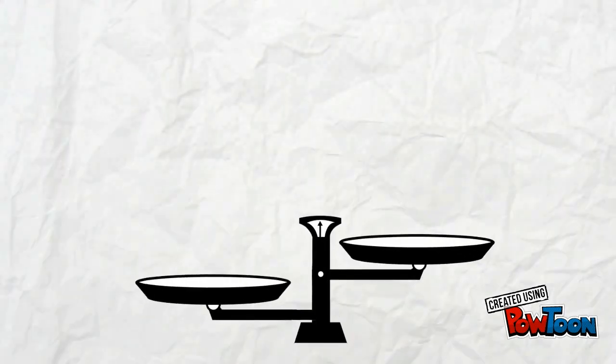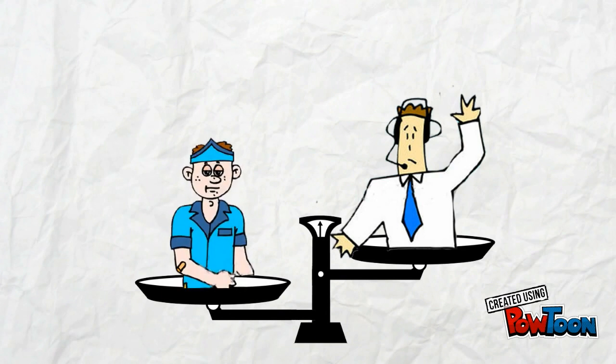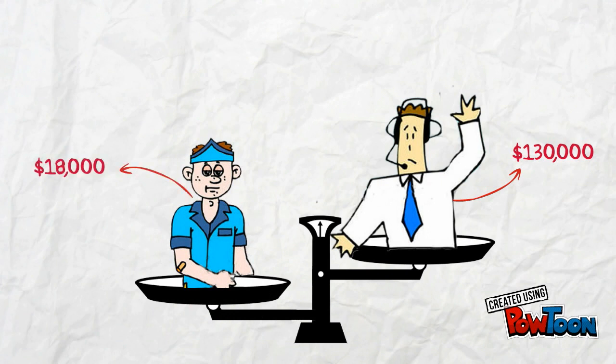Marginal revenue productivity, non-competing groups, compensating differences, and market imperfections are the reasons why wages differ so much among different occupations. And now we understand why Bard gets paid $130,000 and Nas only $18,000 per year.